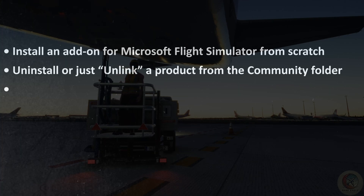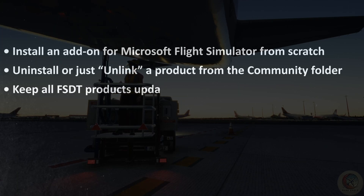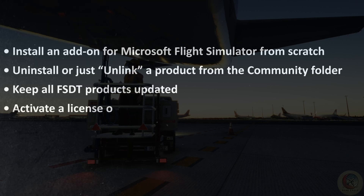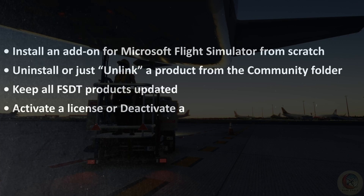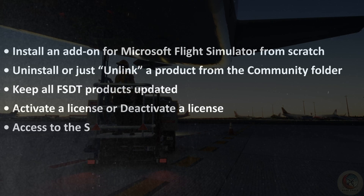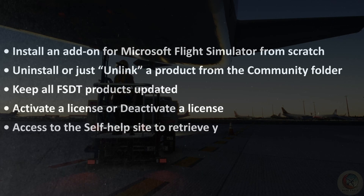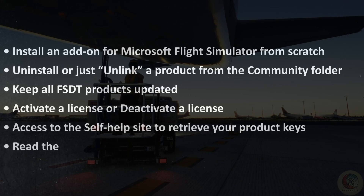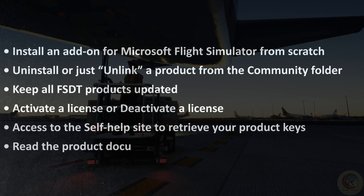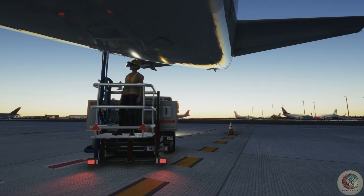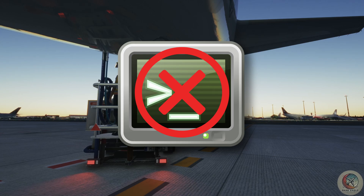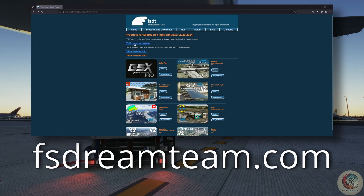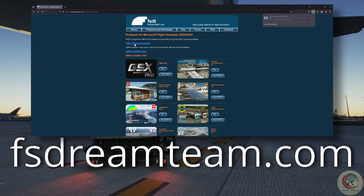Keep all FSDT products updated. Activate a license or deactivate a license. Access to the self-help site to retrieve your product keys. Read the product documentation. This means there's no GSX installer, only the FSDT Universal Installer, and it can be downloaded freely from fsdreamteam.com at any time.